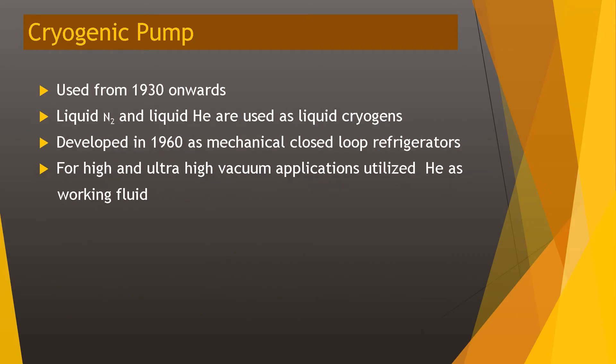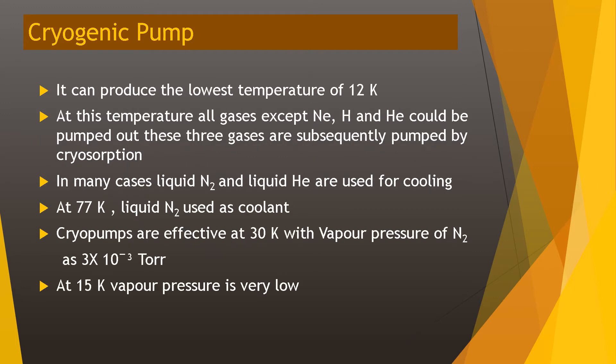Cryogenic pumps have been used from 1930 onwards. Liquid nitrogen and liquid helium are used as liquid cryogens, and mechanical closed-loop refrigerators were developed in 1960. For high and ultra-high vacuum applications, helium is utilized as the working fluid. It can produce a lower temperature of 12 K. At this temperature, all gases except neon, hydrogen, and helium can be pumped out.